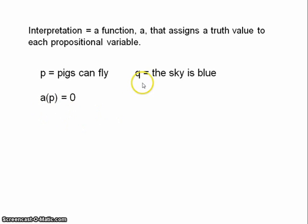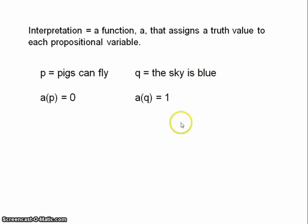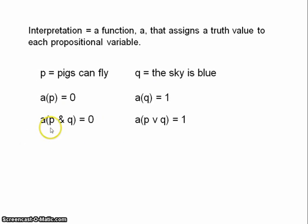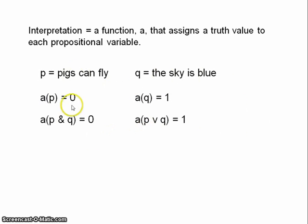Obviously P is false, so we can assign it 0. A stands for the assignment function, and you can read this as: the value of P is 0, or just P is false. Q, of course, is true, so the value of Q is 1. Right here we have an interpretation, and we can use this interpretation to figure out the truth values of more complex formulas. The value of P and Q is false because one of the conjuncts is false. Obviously the value of the disjunction is true. This is all completely standard stuff.